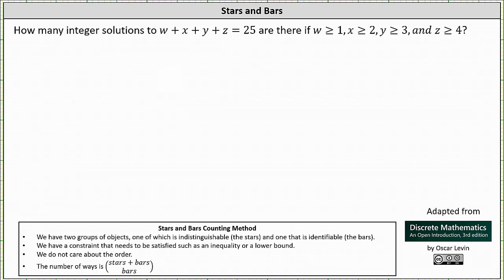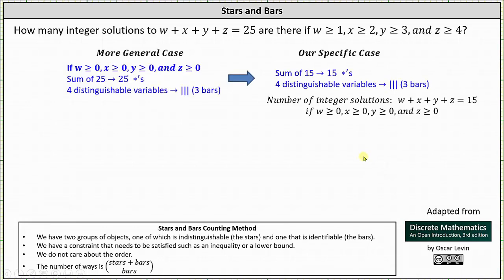We will answer this question using the stars and bars method of counting. To begin, let's consider the same equation with the more general restriction that w, x, y, and z are greater than or equal to 0. In this more general case, the number of integer solutions to w plus x plus y plus z equals 25 is the same as the number of ways we can place 25 identical balls into four containers.